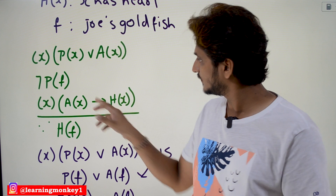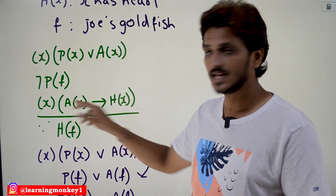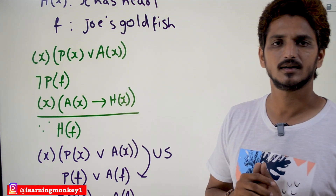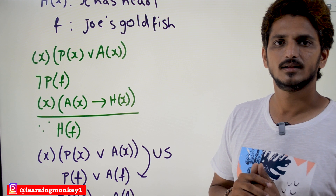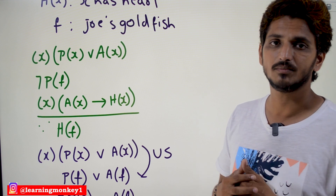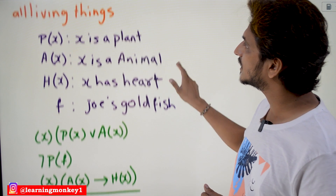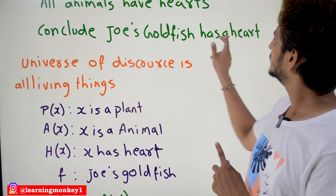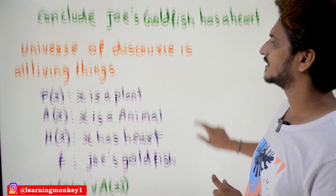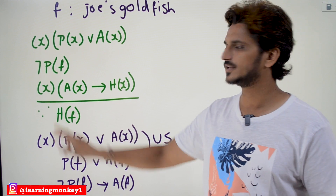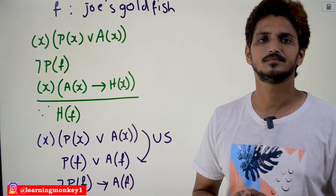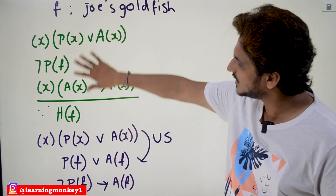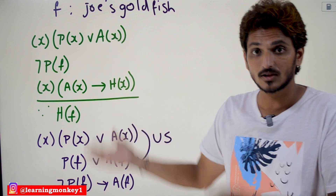The third statement, 'All animals have hearts,' is written as: for all X, A(X) → H(X) — if X is an animal then X has a heart. Our final conclusion to reach is 'Joe's goldfish has a heart,' which is written as H(F).